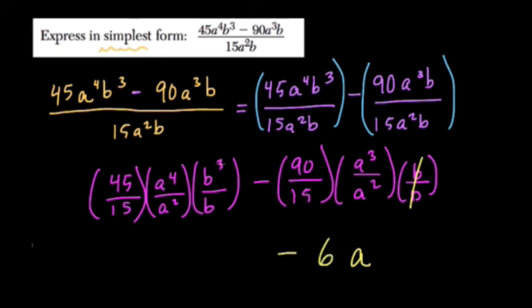Over here, we have b³ divided by b, or just b¹ there. So it's b³ divided by b¹. Subtract the exponents, we get b². a⁴ over a², subtract the exponents, that's a². And 45 over 15 is just 3.